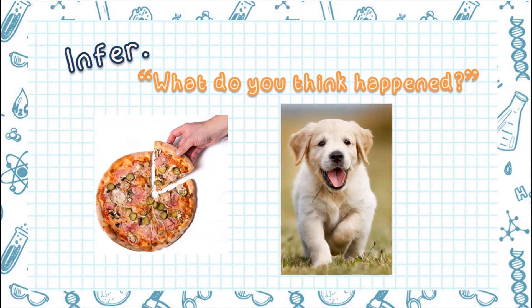Imagine this: you bought a box of pizza and you went to the kitchen. When you get back, the pizza is already empty and your dog is beside it. The question is, what do you think happened? If your answer is the dog ate it, your answer is a good inference. It is considered a good inference because it answered the question, what do you think happened? Always remember this question because it will help you in identifying which one is an inference and which one is a prediction.